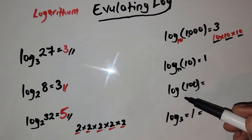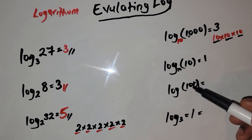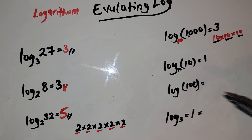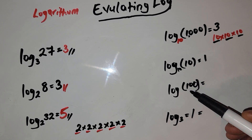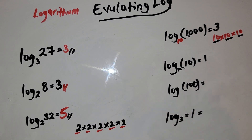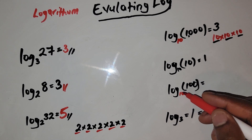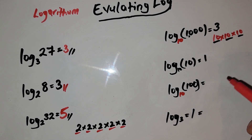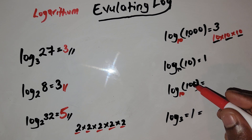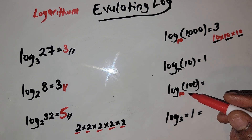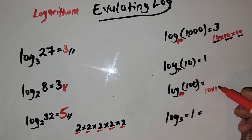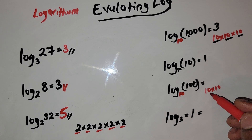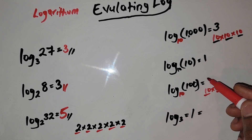So we have log of 100. The same method applies — whenever you don't see a base, there is an imaginary 10. So 10 raised to what power is equal to 100? 10 times 10 is 100, so we count 1, 2 — the answer is going to be 2.